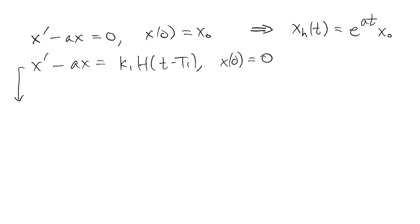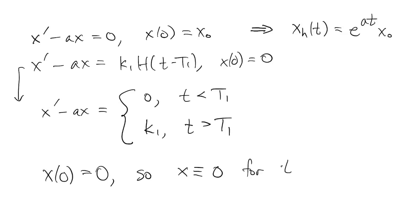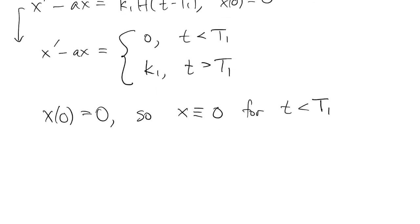For this other problem, we'll just think of it piecewise. For times less than capital T1, the forcing term is just 0. And for times greater than capital T1, it's the constant k1. Now in this problem, we're starting from 0, and the forcing is 0 for a while. So X just stays at 0 all the way up to time capital T1.